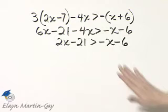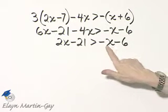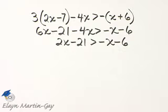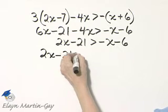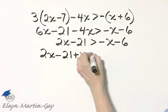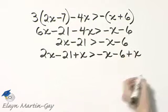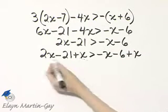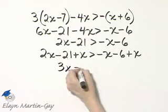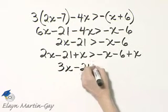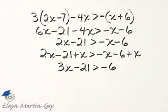Now let's go ahead and take a step. We'll use the addition property for inequalities. I will add x to both sides of my inequality. So here's the left side. I will add x. Here's the right side, and I will add x. Look what happens on the left side. 2x plus x, that's 3x, still minus 21 is greater than. These x's subtracted out, and I have negative 6.